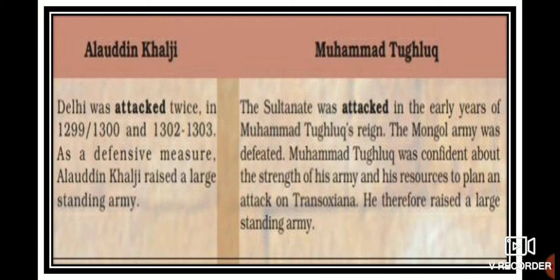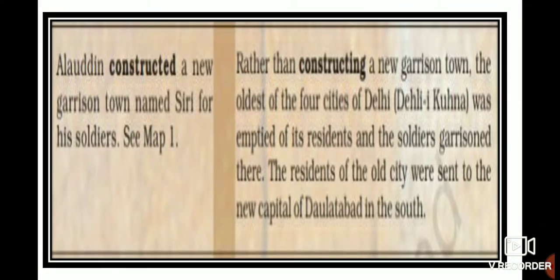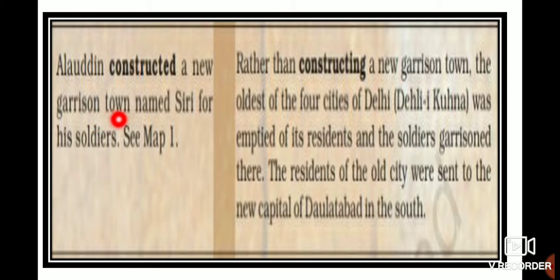Alauddin Khilji constructed a new garrison town named Siri for his soldiers. Garrison towns are places guarded by soldiers where soldiers are stationed. Alauddin Khilji constructed this new garrison town named Siri, and it was only for soldiers. Since he had a huge army, facilities had to be provided for them.